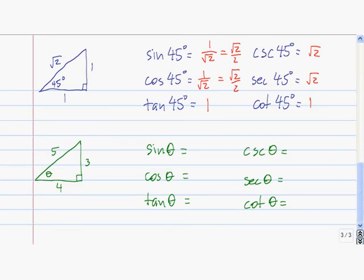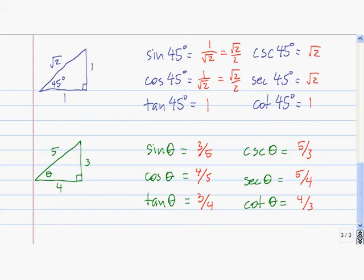Here's another one for you to try. Find all trig functions of the angle theta shown in this right triangle with the given side lengths. Press pause while you work on it. By finding the appropriate ratio of the appropriate sides, you find these are the answers.